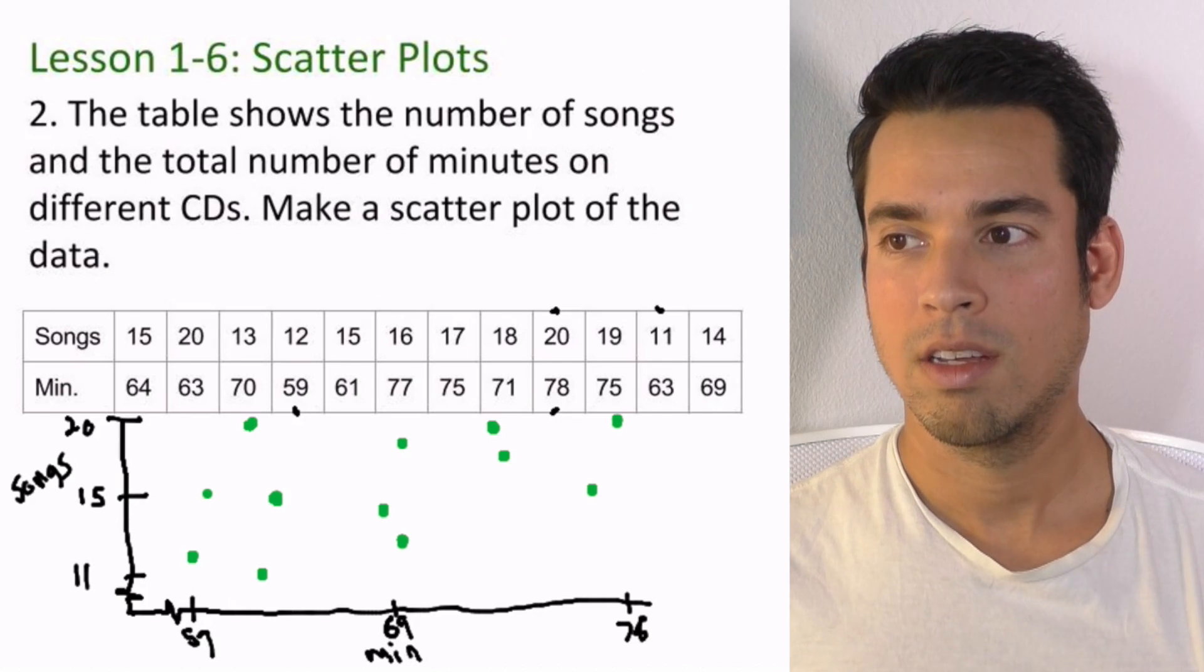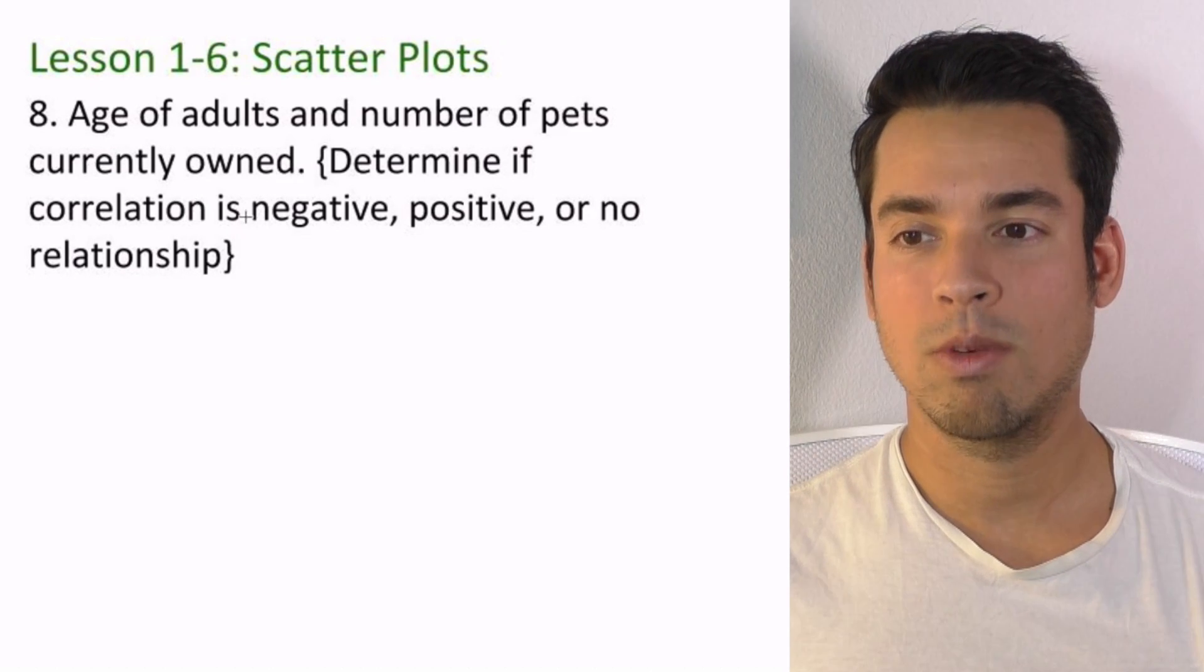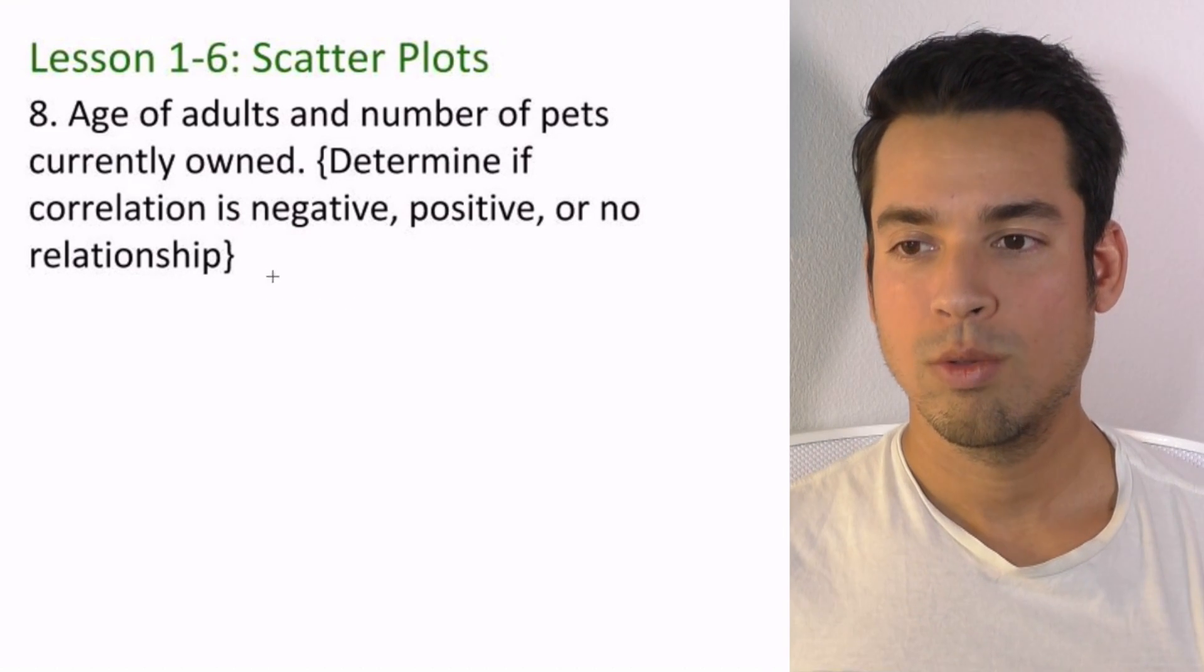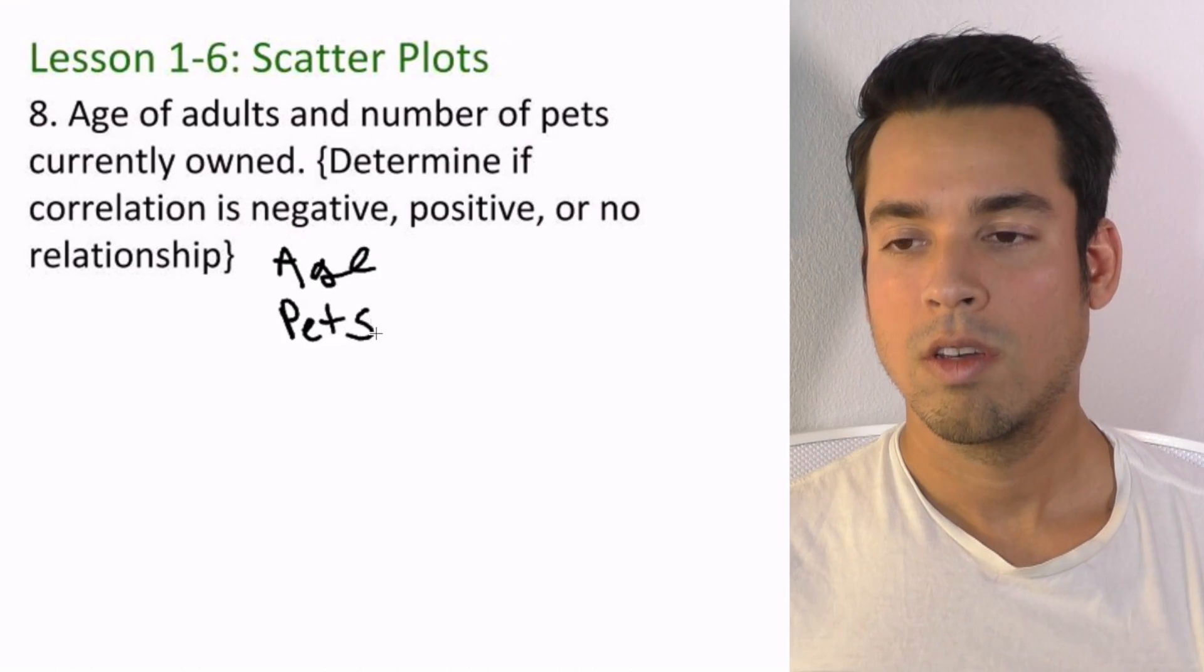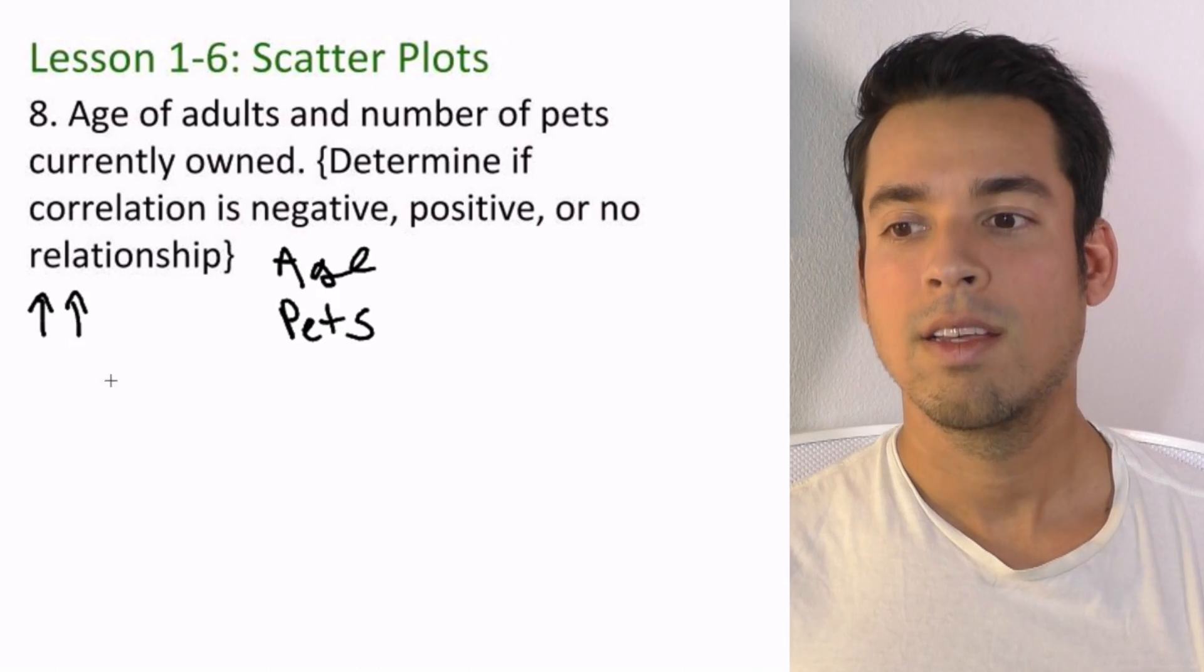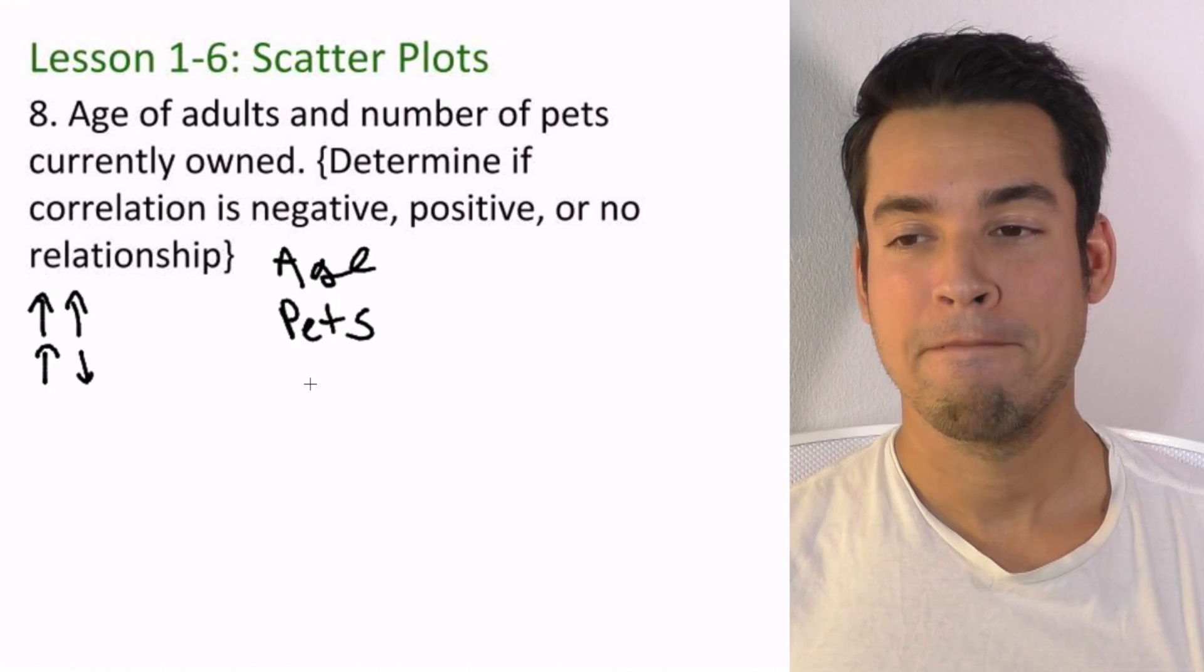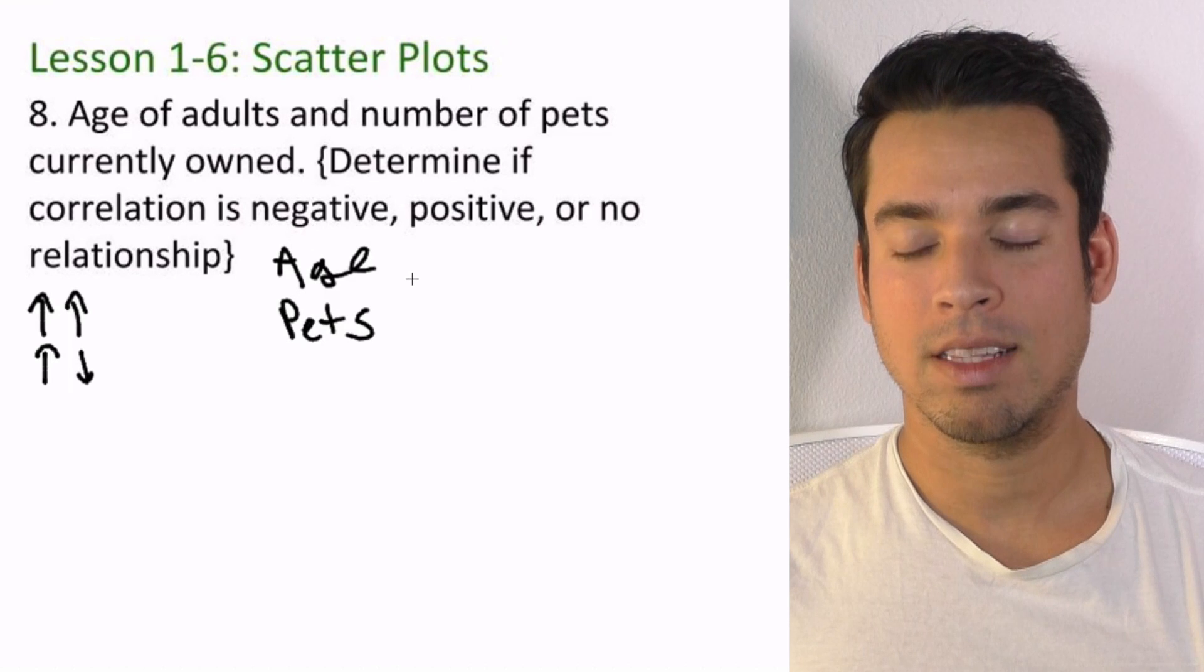Okay, let's move on to number 8: age of adults and number of pets currently owned. We're trying to figure out is there a negative, positive, or no correlation. We got age and we've got pets. Two things have a positive correlation when one goes up and the other goes up. It's negative when one goes up and the other goes down, or vice versa. No correlation means we can't tell.